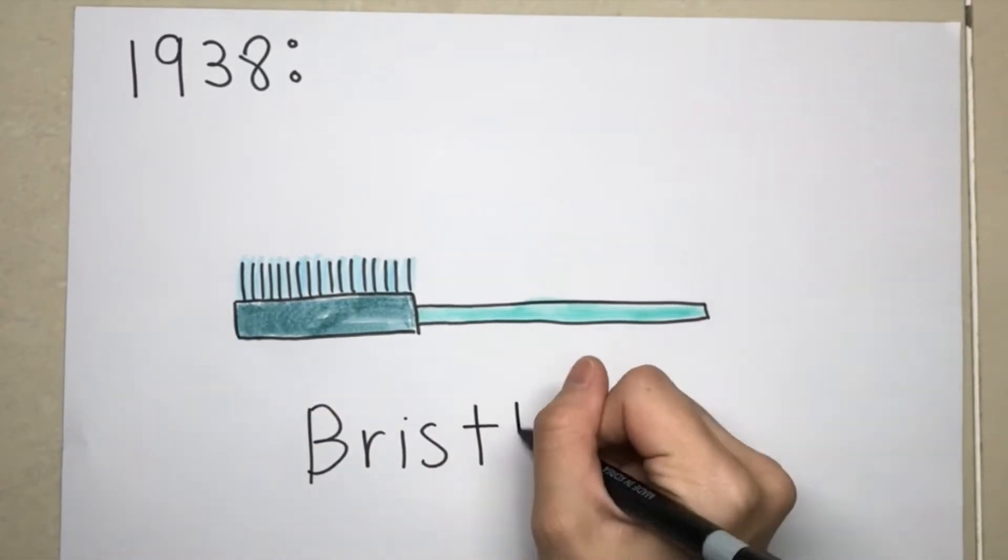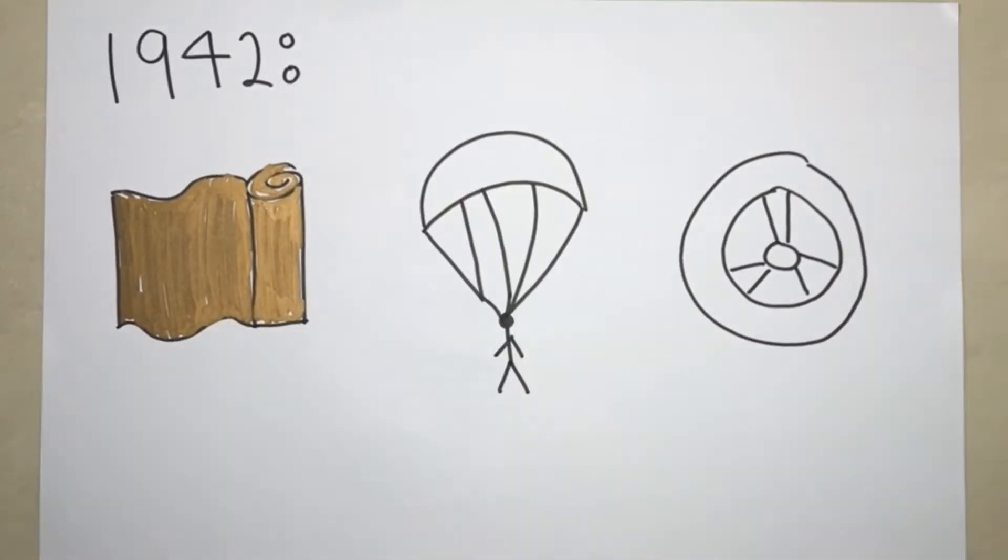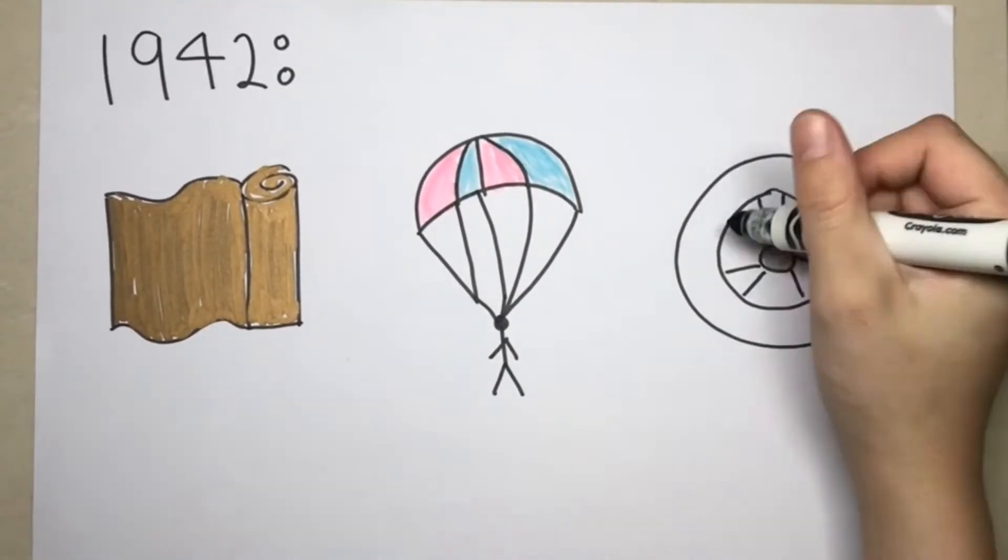It was first used for bristles for toothbrushes. It was then used to replace silk, in parachutes and vehicle tires.